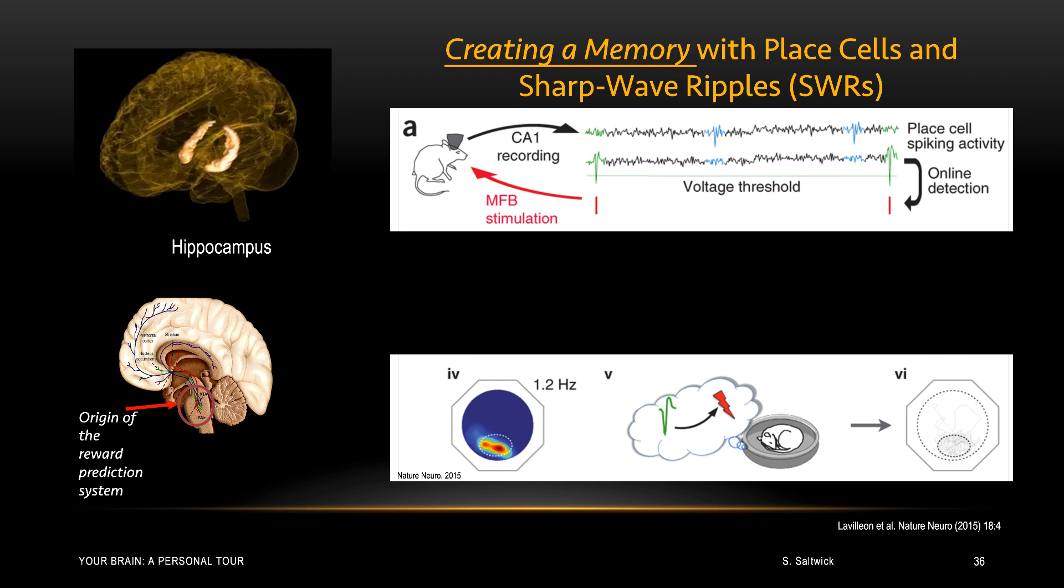After the rat wakes up, we're going to put him back in the environment, and lo and behold, the rat makes a beeline for that area of the maze associated with the place cell. Amazing. We have created a memory. The rat never experienced food or any other reinforcer in that place. We've done all of this electronically. We've monitored the place cell of the hippocampus, stimulated the reward system whenever the place cell fired during sleep. So if we can create memories by pairing sharp wave ripples in the hippocampus with stimulation of the reward system, can we do the opposite? Can we disrupt learning and memory by disrupting sharp wave ripples? And it turns out, we can.